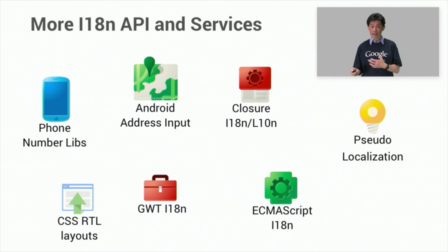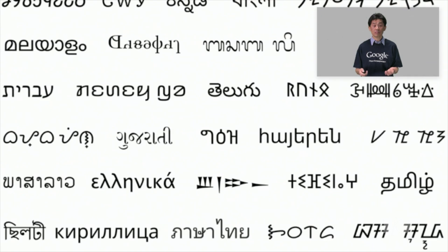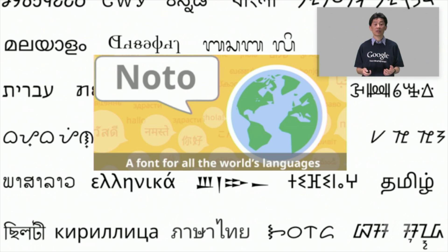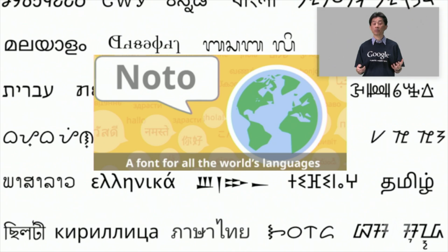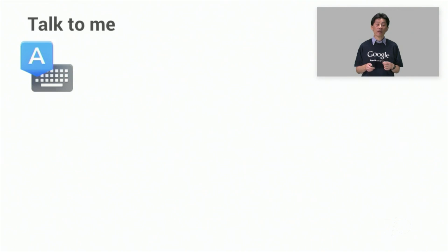Besides ICU and CLDR, there are many more tools to help your ITN efforts. Besides APIs, your apps need platform support to display text in your users' languages. Google has developed the Noto font family, which covers hundreds of languages. Noto is embedded in Android and Chrome OS, and it's also open source so it can be used by any other platform or app.